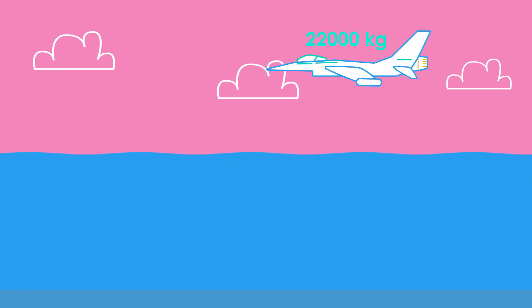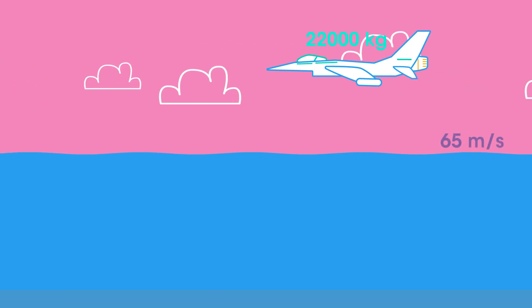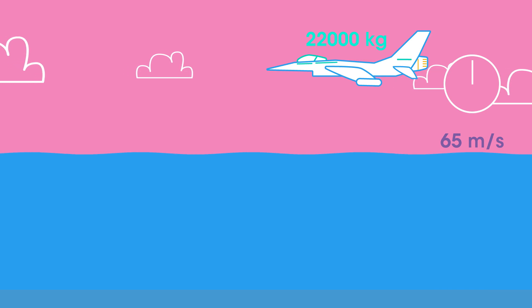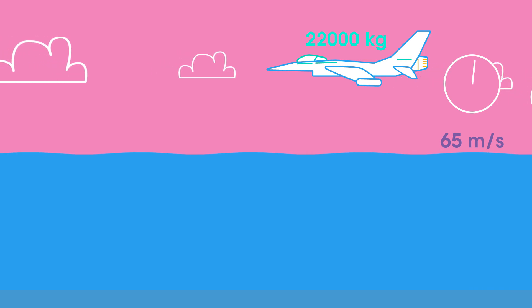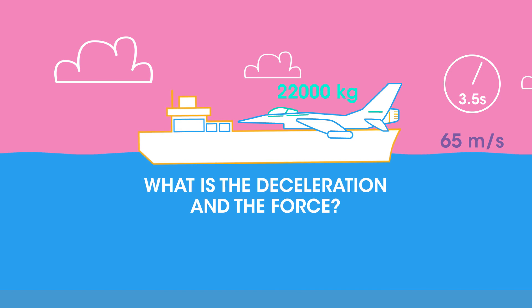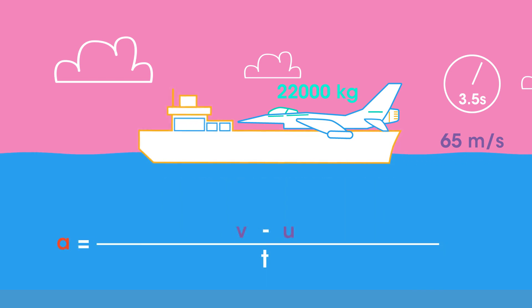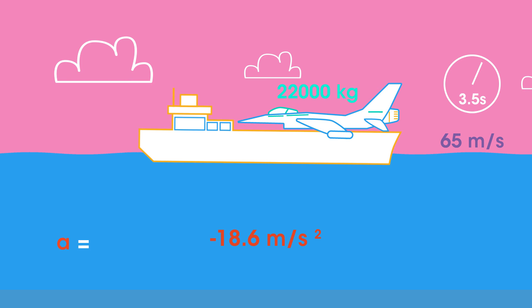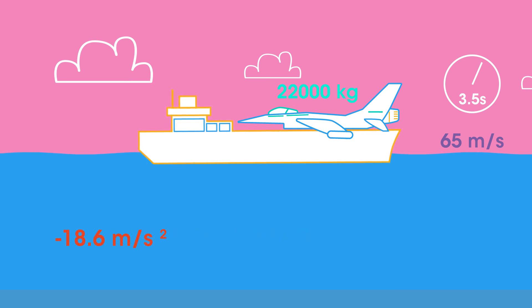A jet fighter of 22,000 kilograms, traveling at 65 meters per second, lands on an aircraft carrier and is brought to a stop in 3.5 seconds. What is the deceleration and force involved? The negative answer shows negative acceleration — in other words, it's slowing down.